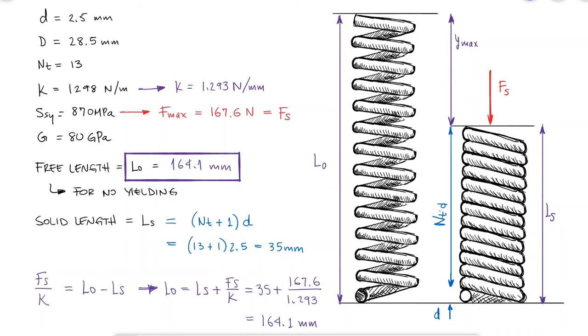Just to reiterate, with this free length that we design and have control over during the manufacturing process, the maximum force that will go into a torsional shearing stress will be that force that brings down the spring to its solid length. Increasing the compressive force past this point would only physically compress the music wire of the spring. Any free length greater than this one would require the force to the solid length to be higher and therefore cause yielding.